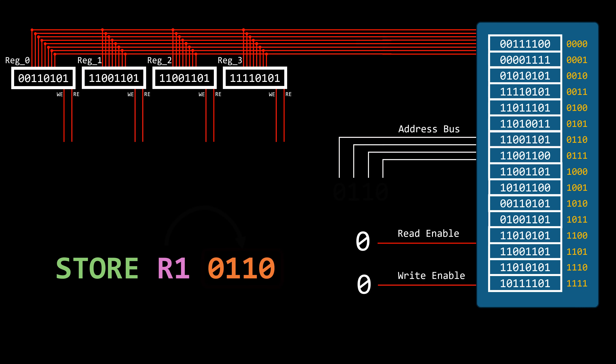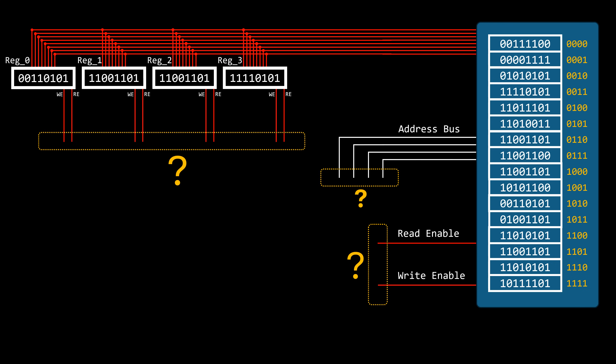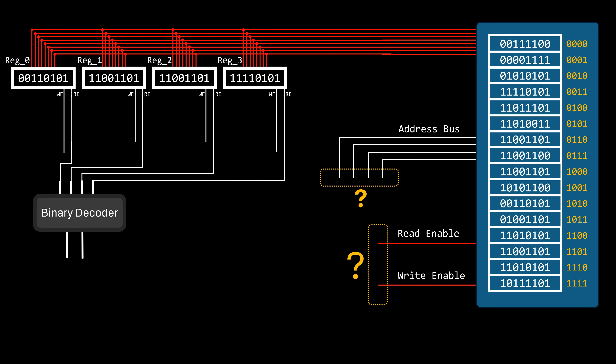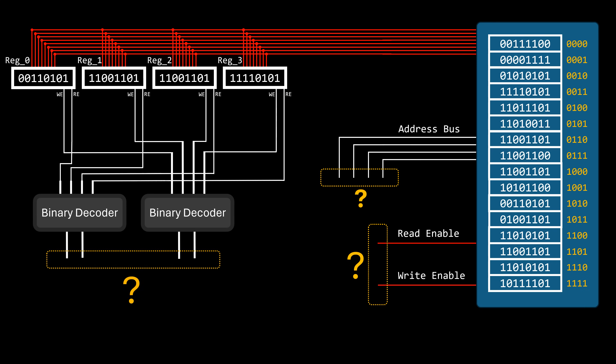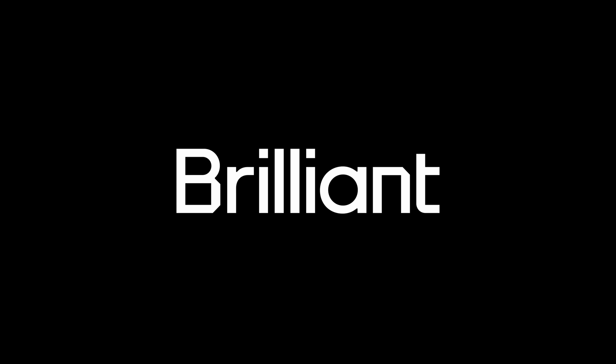But now we have a question: where do all the signals necessary to control these components come from? We already established that binary decoders can be used for this task, but then where do the inputs for those decoders come from? The answer, after a quick message from Brilliant.